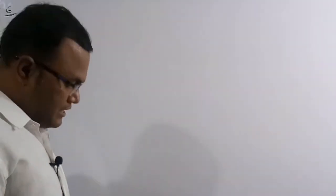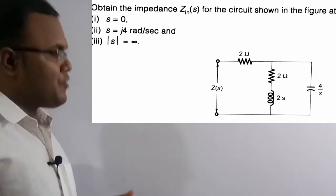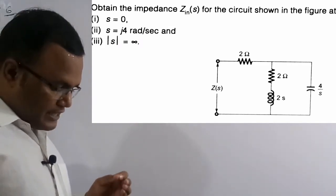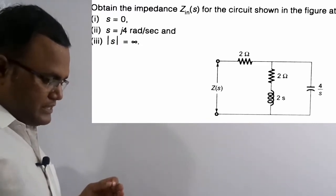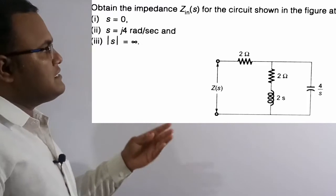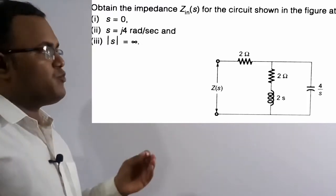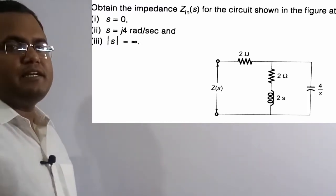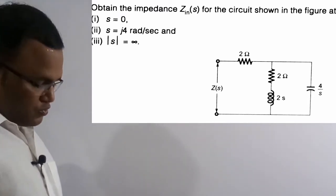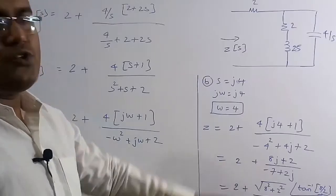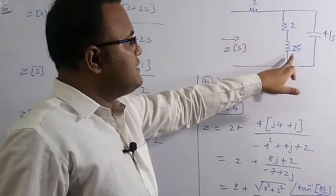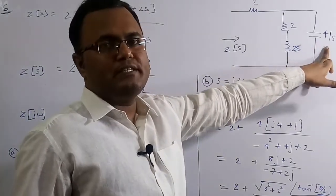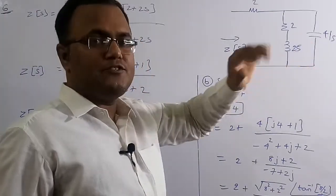Let's get started. We are going to solve the sixth question: obtain the impedance Z(s) in terms of Laplace transform for the circuit shown in the figure, at three instances — s=0, s=j4 rad/s, and |s|=∞. This question is from IES Mains 2008 for 12 marks. The circuit has resistance 2Ω, inductance 2s, and capacitor 4/s — already given in the Laplace transform domain.